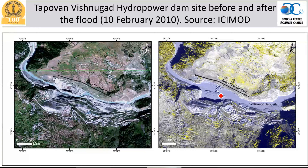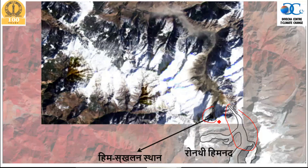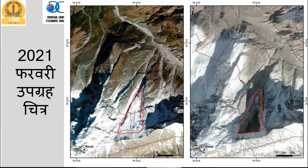A lot of people were killed during this flash flood and there was enormous loss to human life and property. It is important to understand what really happened. The Ronti glacier is the region where the ice avalanche took place. A satellite image taken before the incident and another taken after clearly show the difference. The upper reaches of the scar are at 5500 meters elevation and the lower reaches are at approximately 4500 meters.